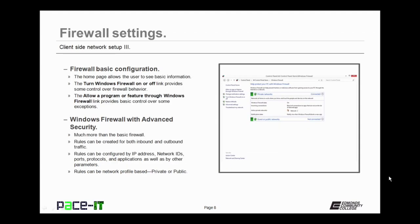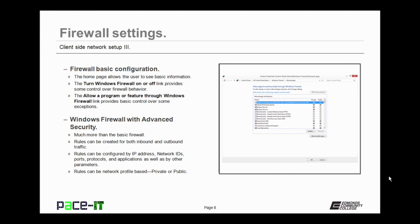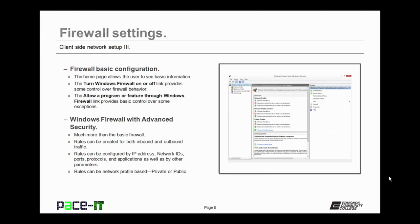Now let's discuss firewall settings for Windows Vista and Windows 7. You can reach Windows Firewall from the control panel. The home page allows the user to see basic information. The 'turn Windows Firewall on or off' link provides more control over firewall behavior, and the 'allow a program or feature through Windows Firewall' link provides basic control over exceptions. Windows Firewall with advanced security added more functionality: rules can be created for both inbound and outbound traffic, configured by IP address, network ID, ports, protocols, or applications, and rules can be based on network profile — affecting only private or public networks.